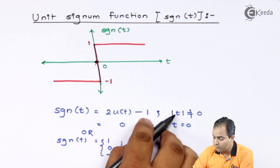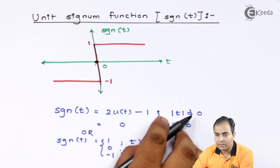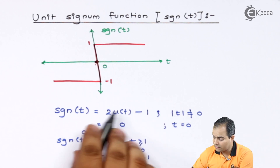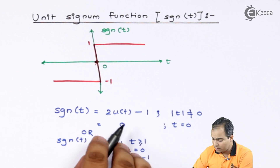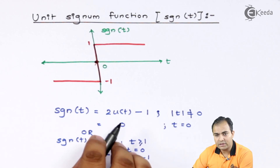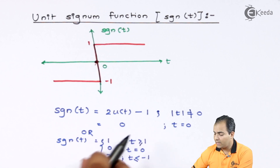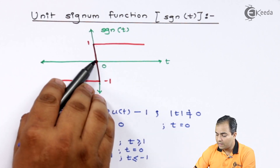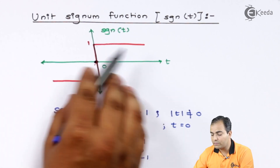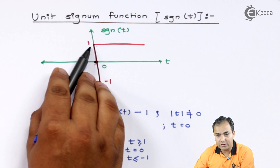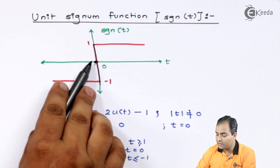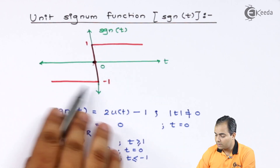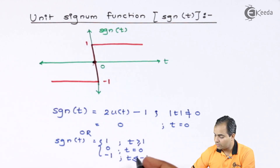It is available for mod of t when it is not equal to 0, and this is the function. For t equals to 0 the amplitude is 0. In the second case, for t greater than equals to 1 this amplitude is 1, and for t less than equal to minus 1 it is minus 1.